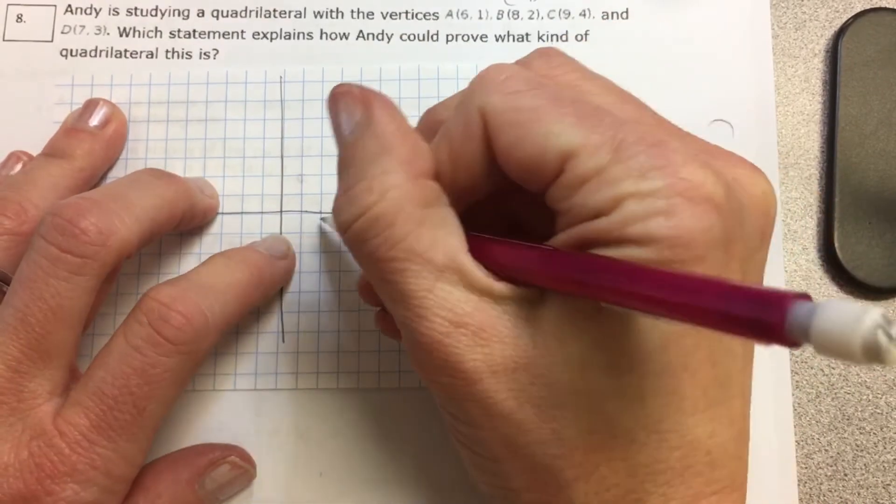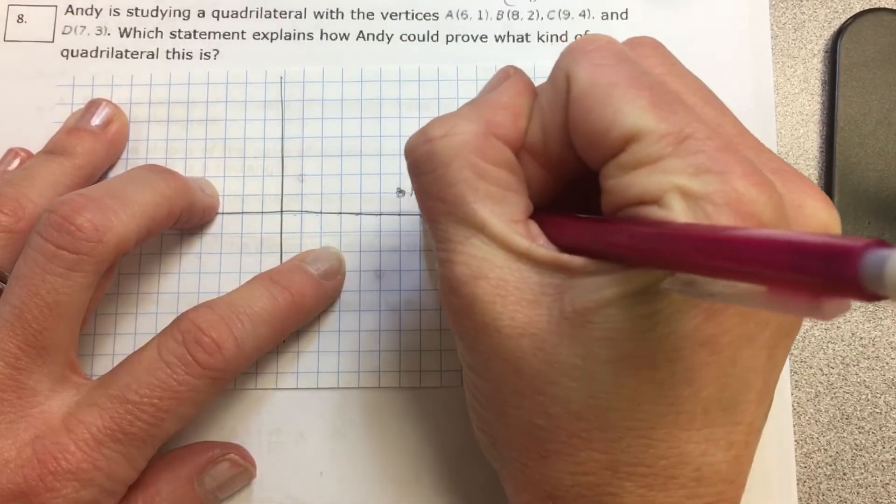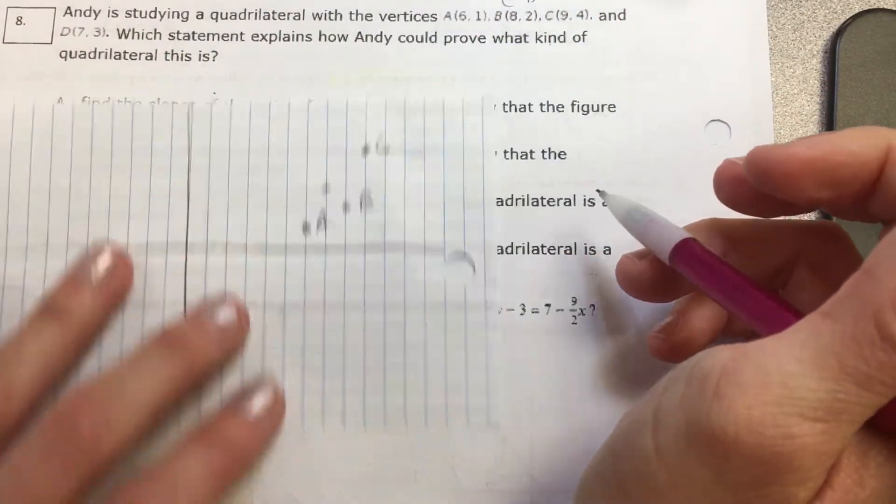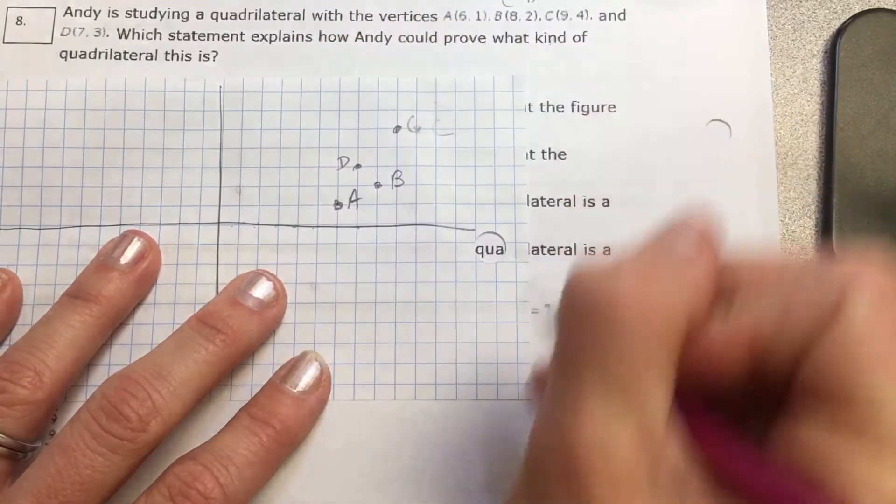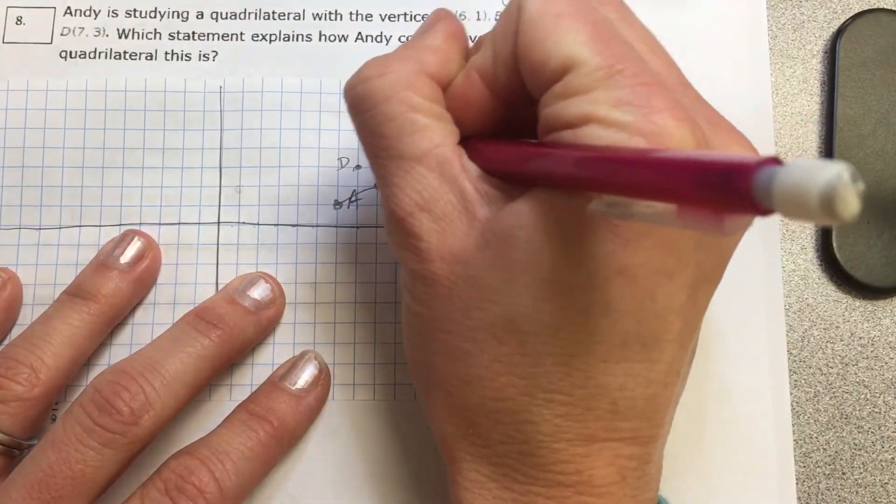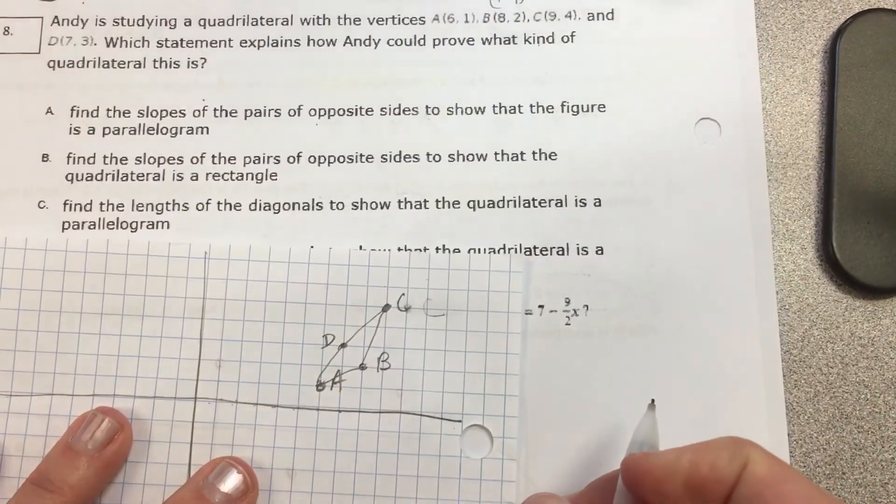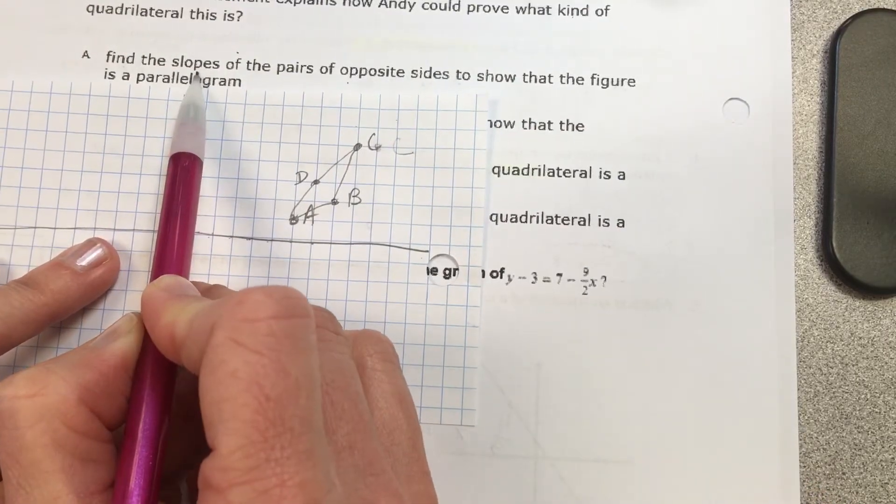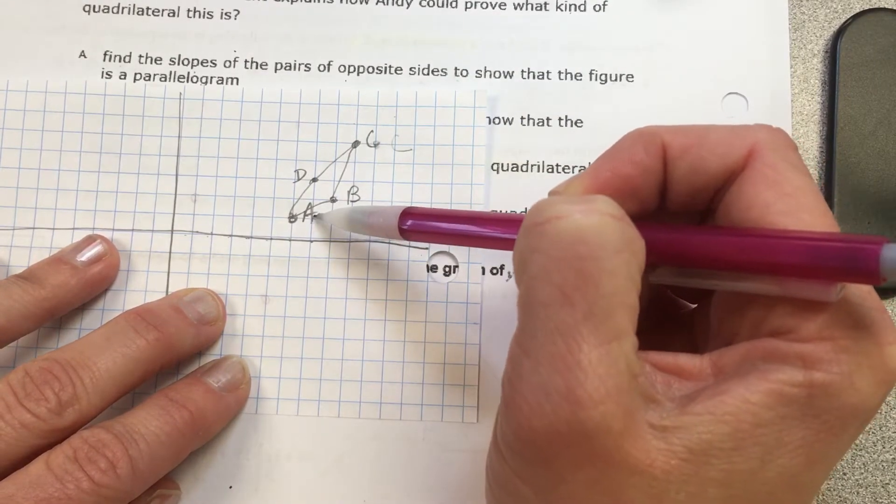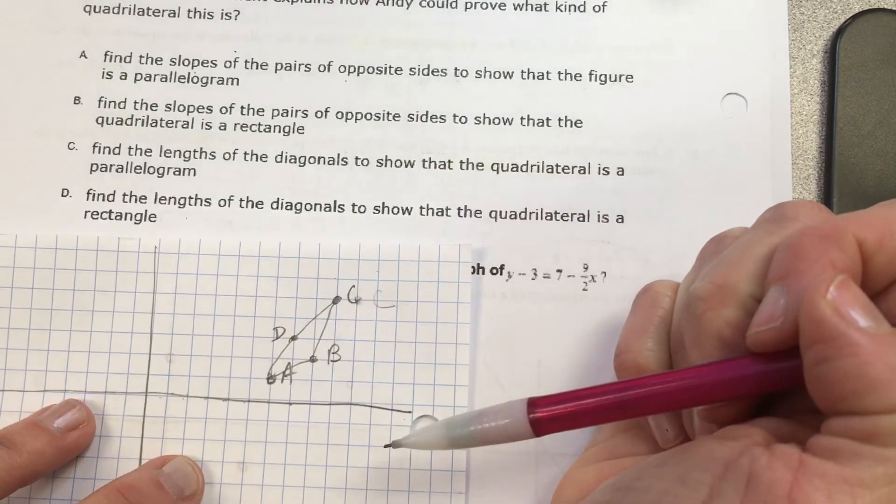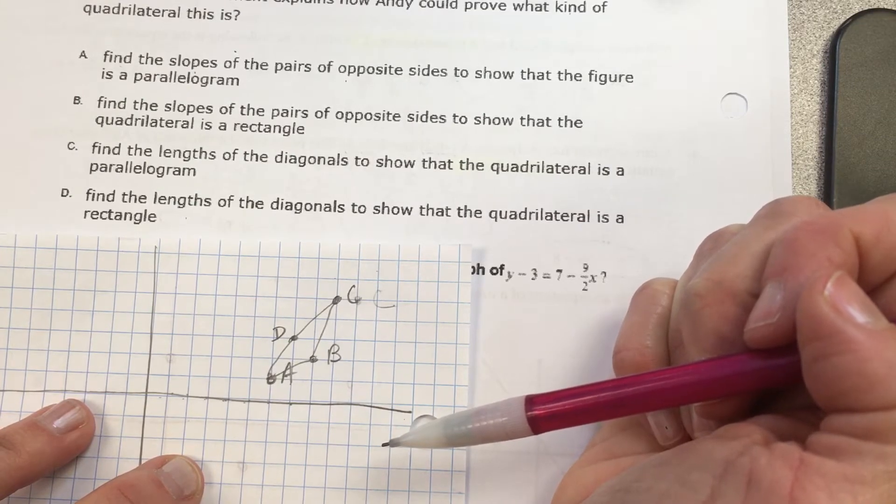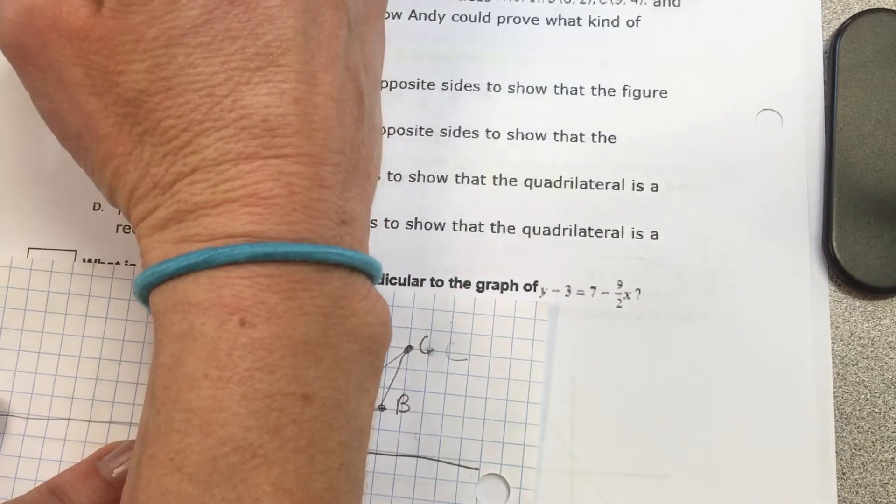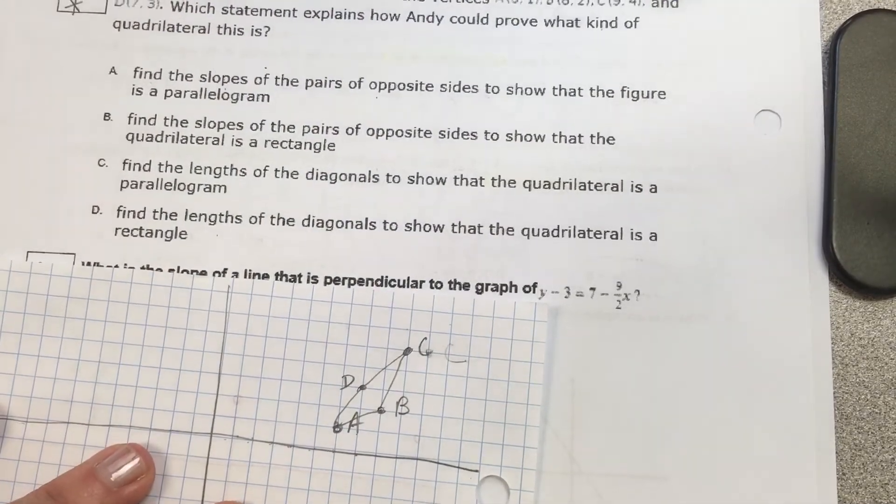9, 4 is C. And then 7, 3 - that's D. I think this is a typo. Some of these should have had negatives. That is a quadrilateral, barely. Could he find the slopes? We're going to skip this one right now. I think there's a negative left off of it.